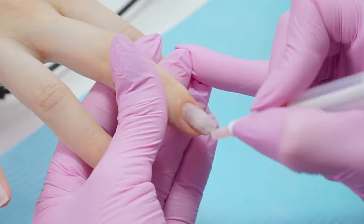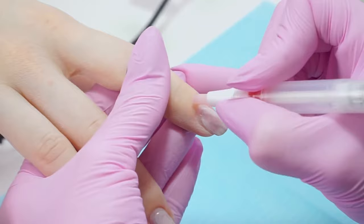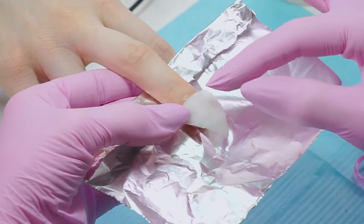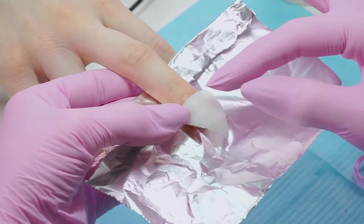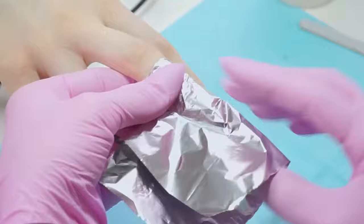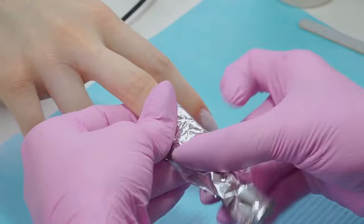Before removal I moisturize the cuticle and the skin around the nail with oil without getting on the nail. The oil will protect the skin from harsh chemical exposure. Place the foil under the finger and put the cotton pad triangle on the nail. I fold the corner to the tip and wrap the nail.